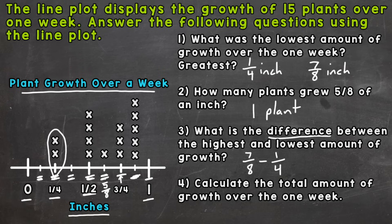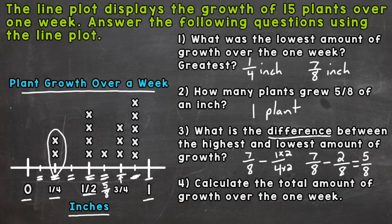Let's rewrite the problem: seven eighths minus — I know four times two gives me eight, so I need to do the same thing to the top: one times two is two. So seven eighths minus two eighths. That two eighths is equivalent to one fourth, so we did not change the value of the problem. Seven minus two is five, and we keep our denominator the same: eight. So five eighths of an inch is the difference between the greatest and lowest amount of growth.